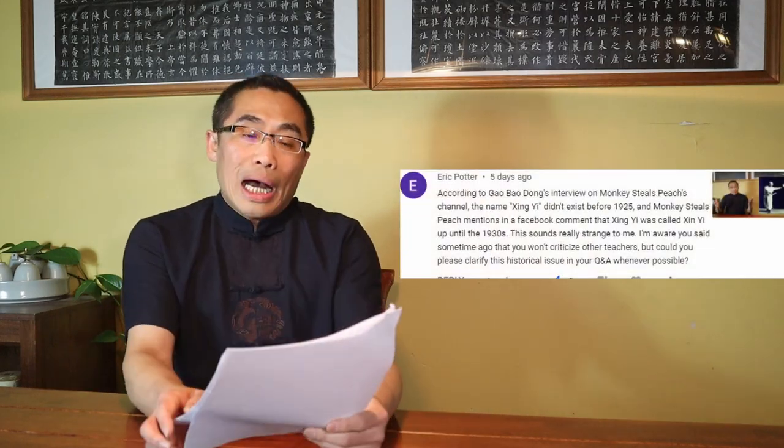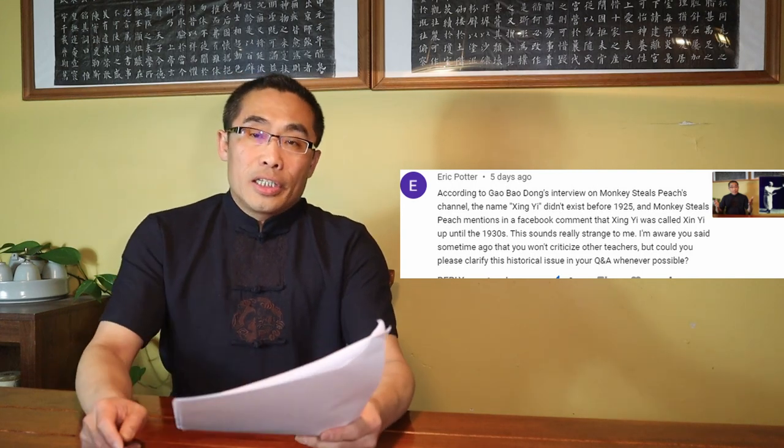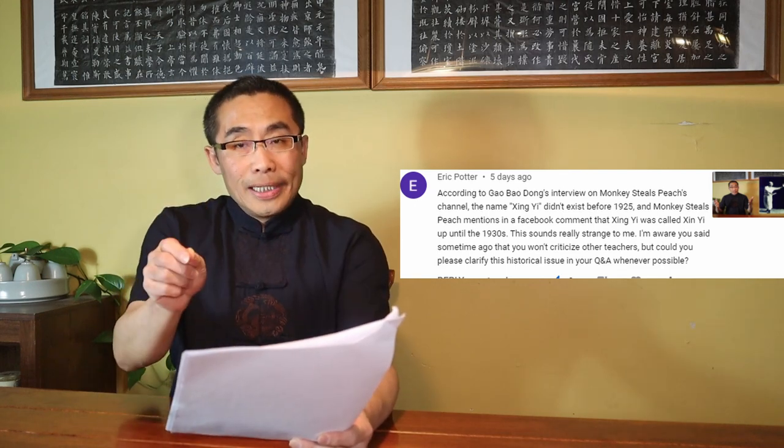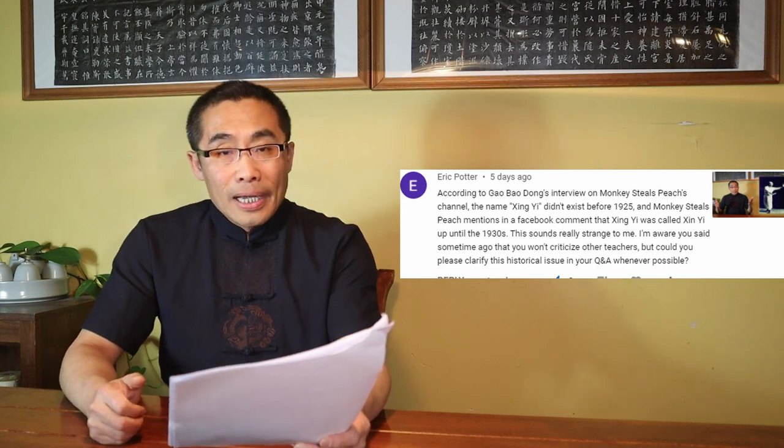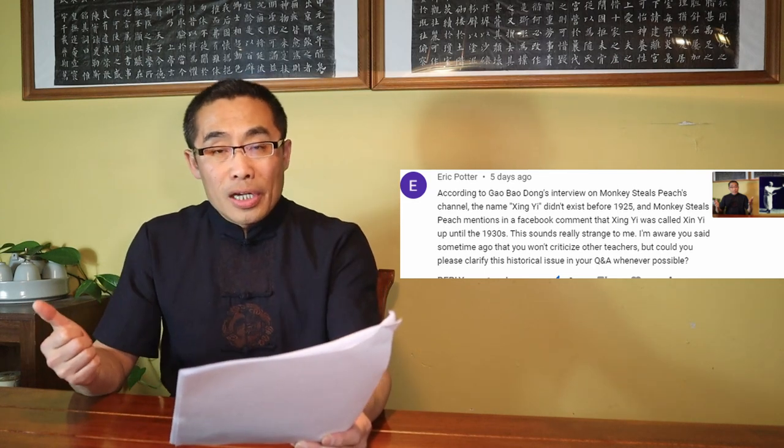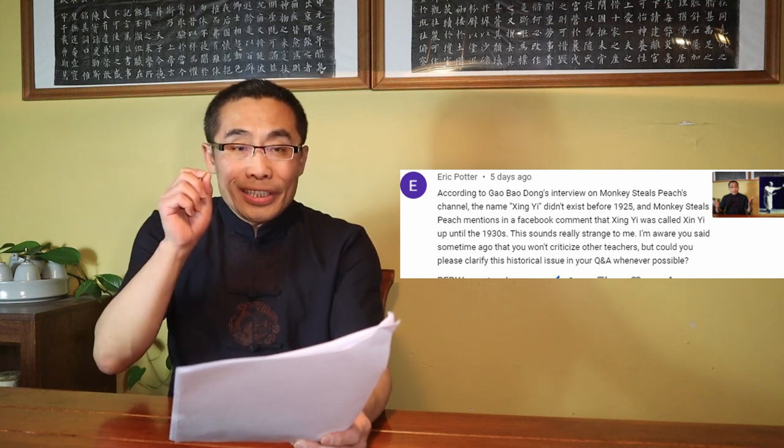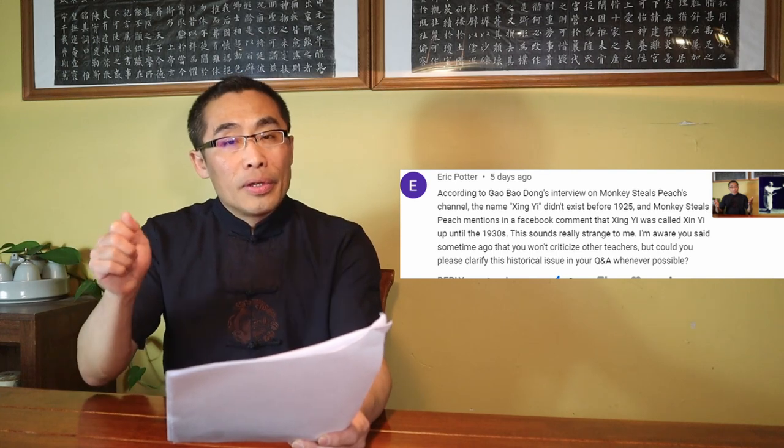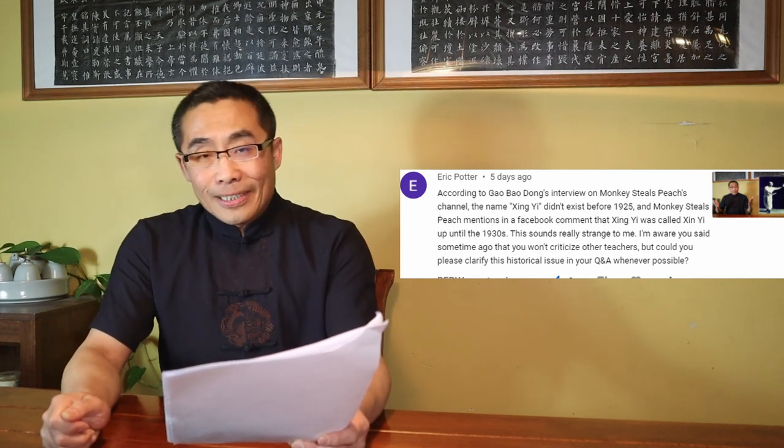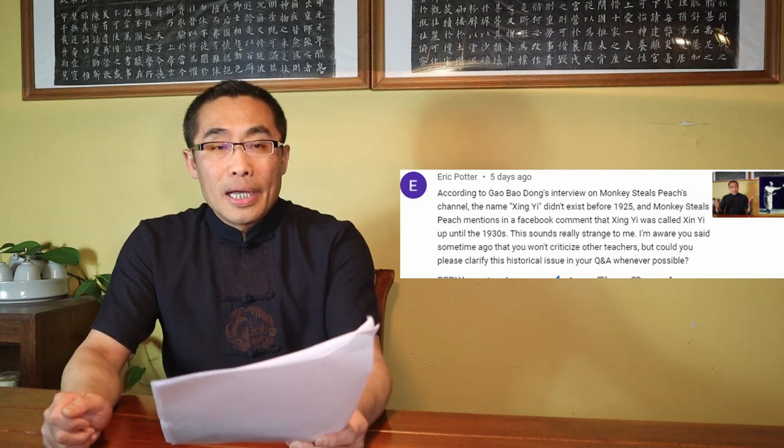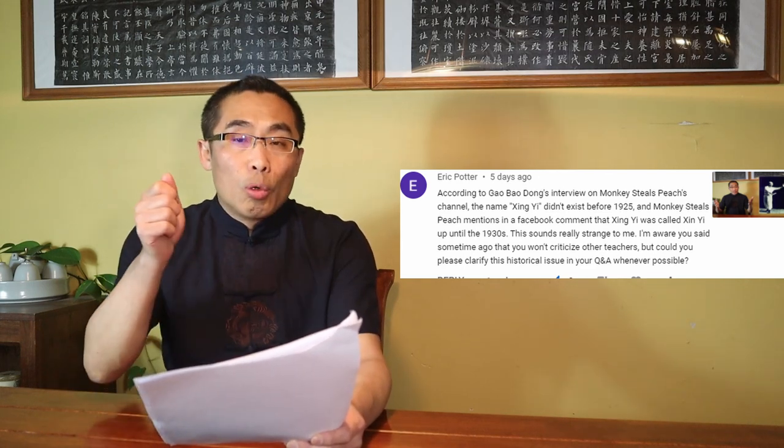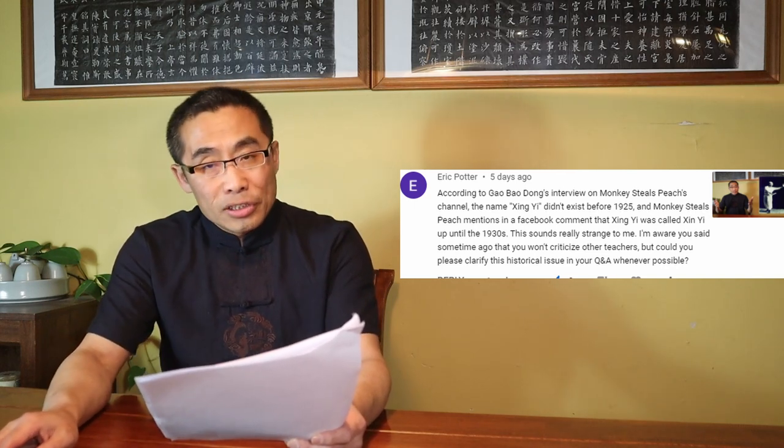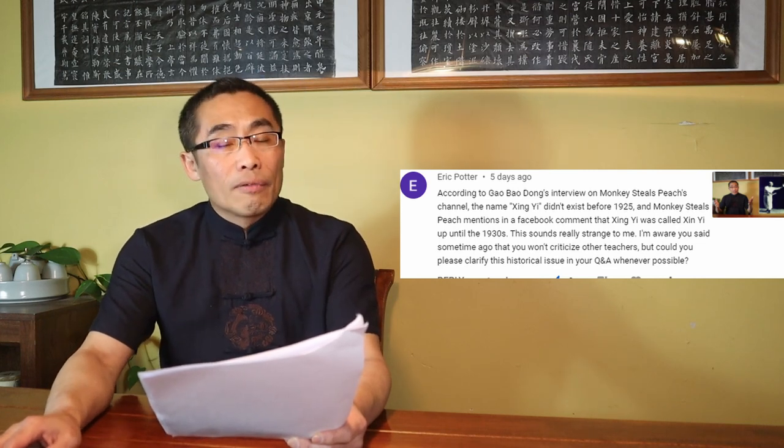Second, according to an interview of some Xinyi teacher on some YouTube channel, the name Xing Yi with a G didn't exist before 1925 and that YouTuber mentioned in a Facebook comment that Xing Yi with a G was called Xin Yi without a G up until the 1930s. This sounds really strange to me. I am aware you said some time ago that you won't criticize other teachers but could you please clarify this historical issue in your Q&A whenever possible?